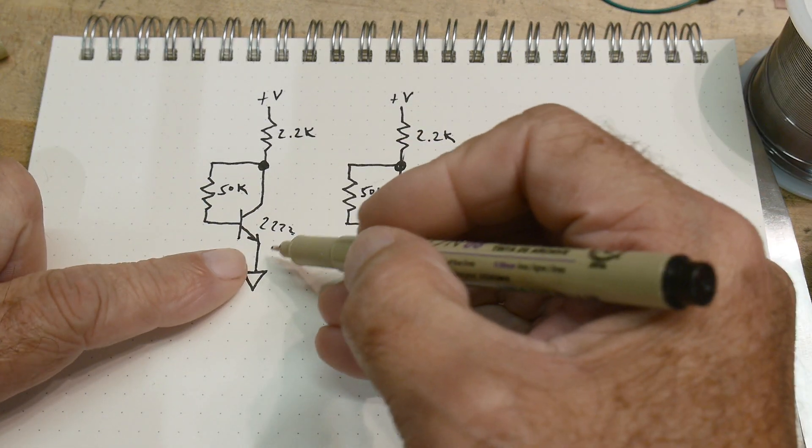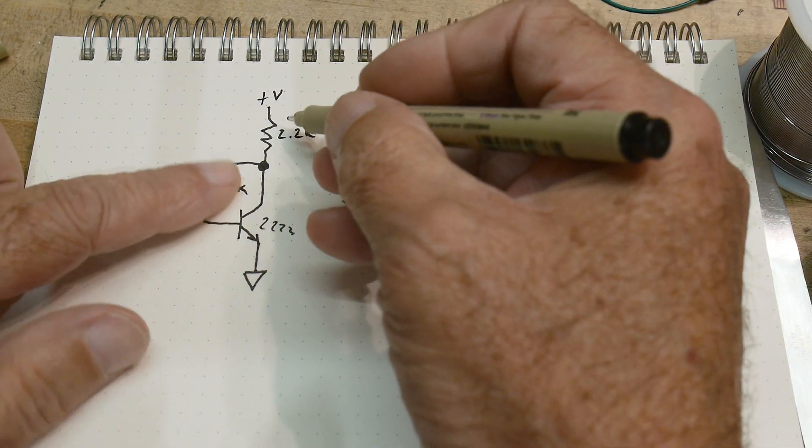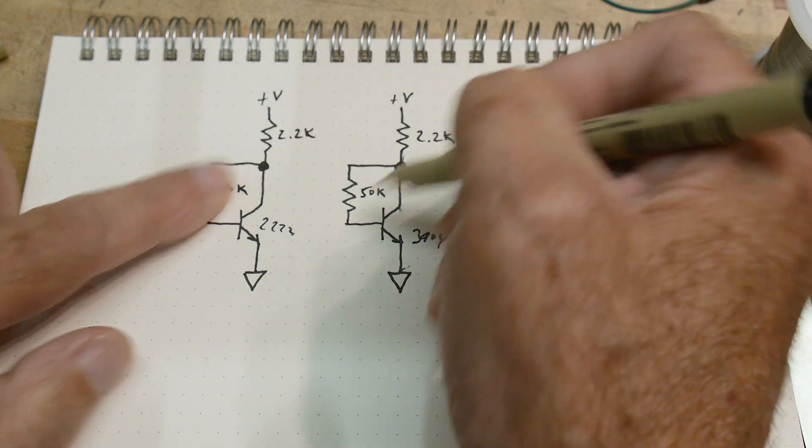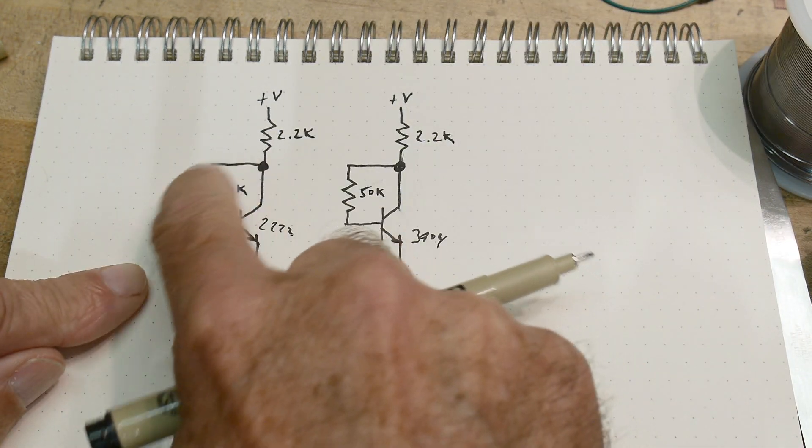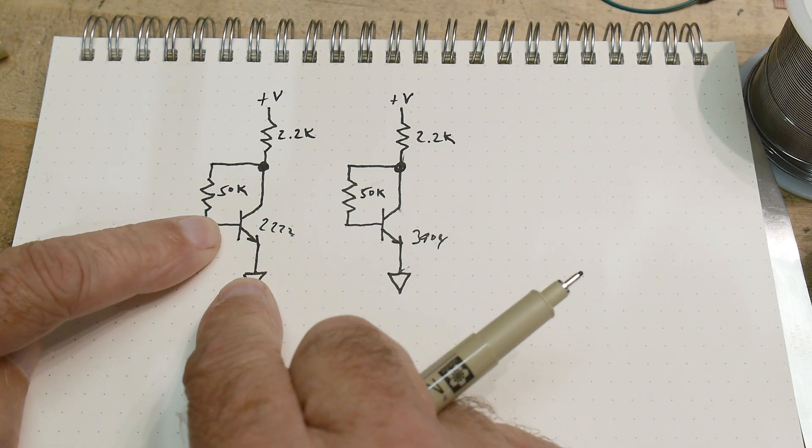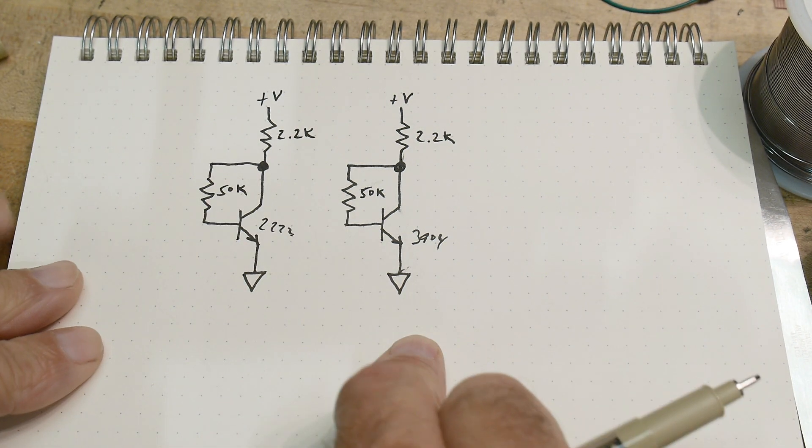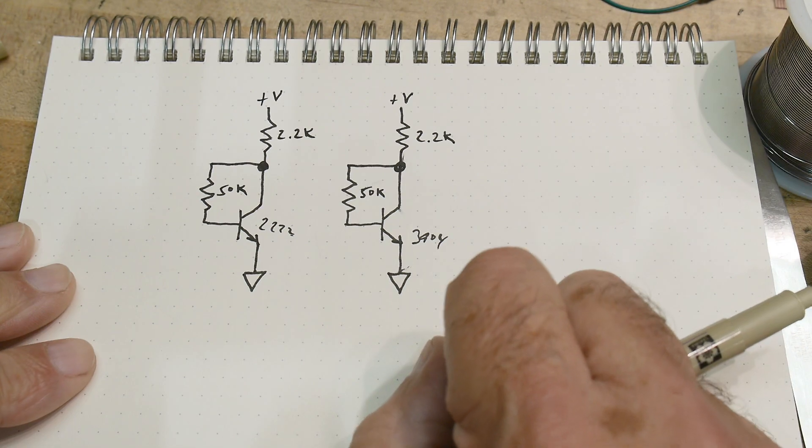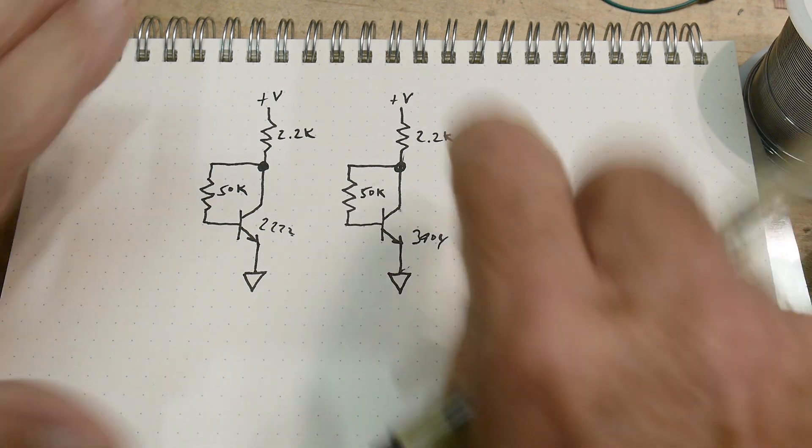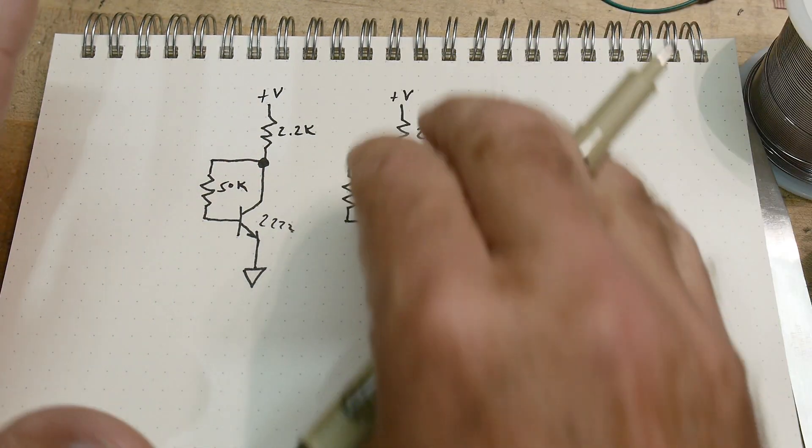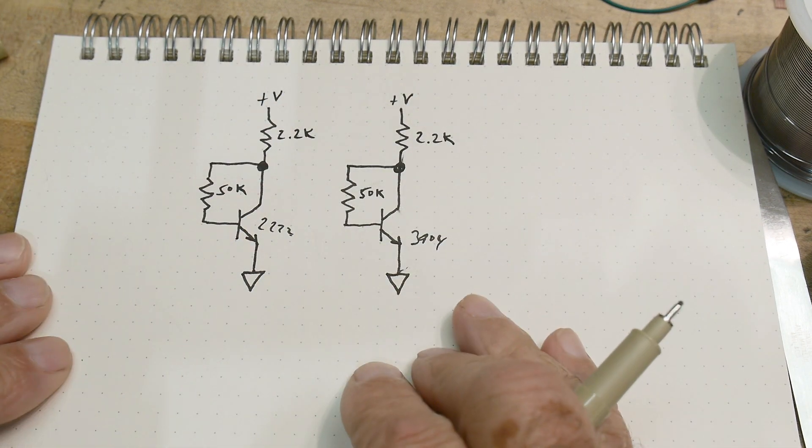They're a transistor and there's a collector resistor and then there's a biasing resistor that brings a positive voltage here to the base, which means the transistor's turned on. So this transistor's on and this transistor's on and they're identical. They're identical circuits absolutely and everywhere, they're identical.